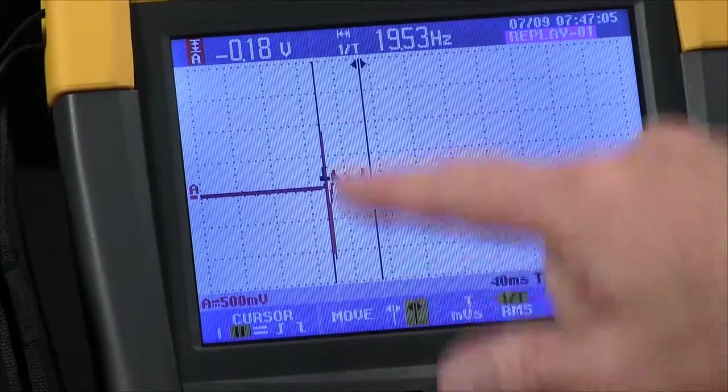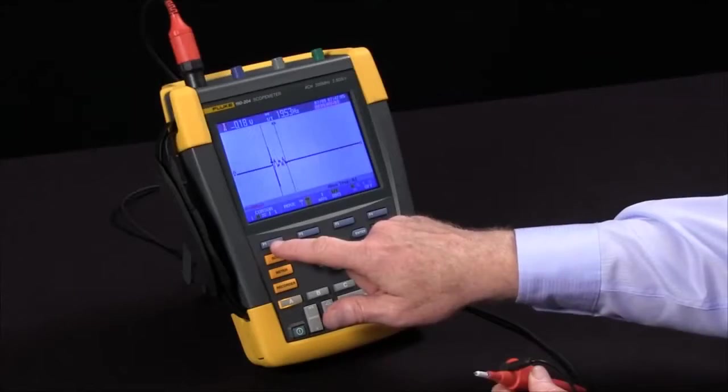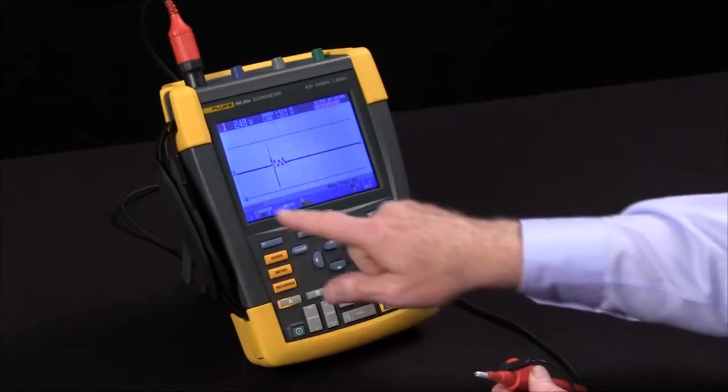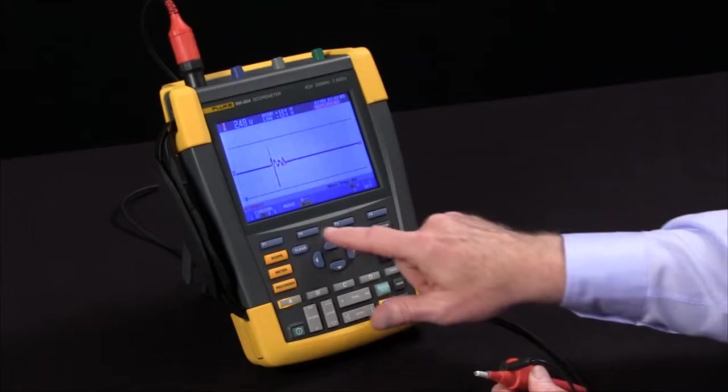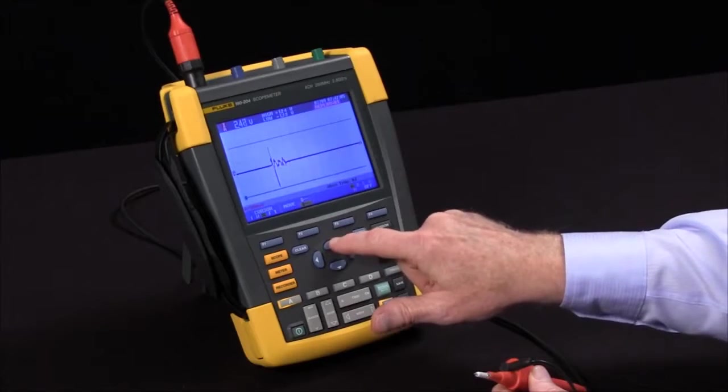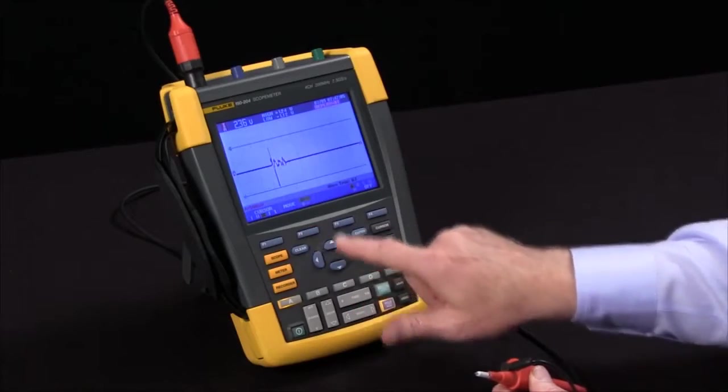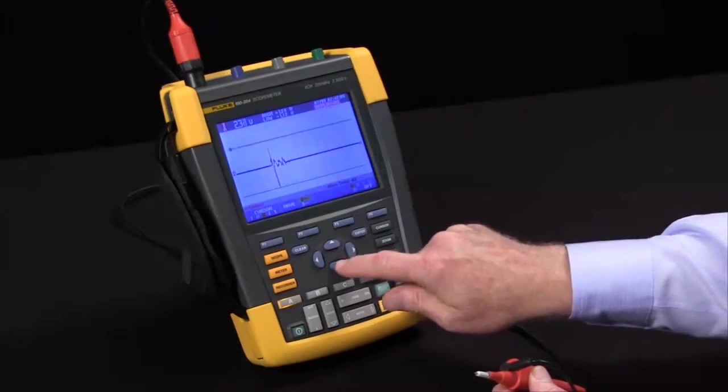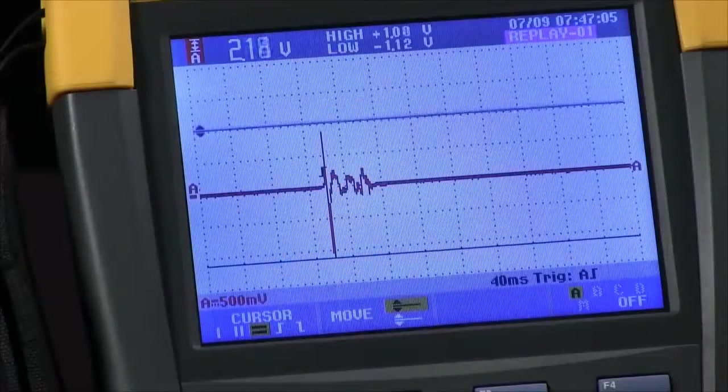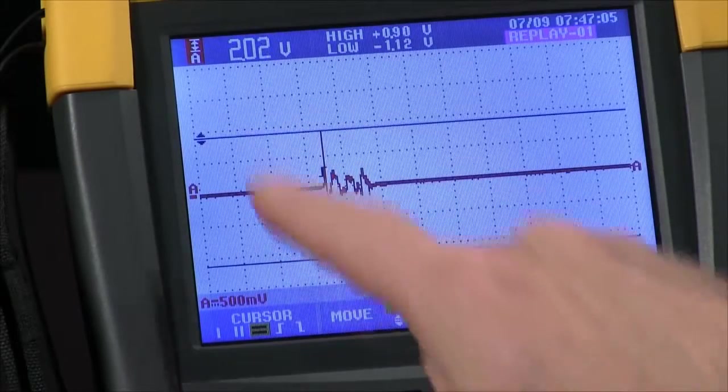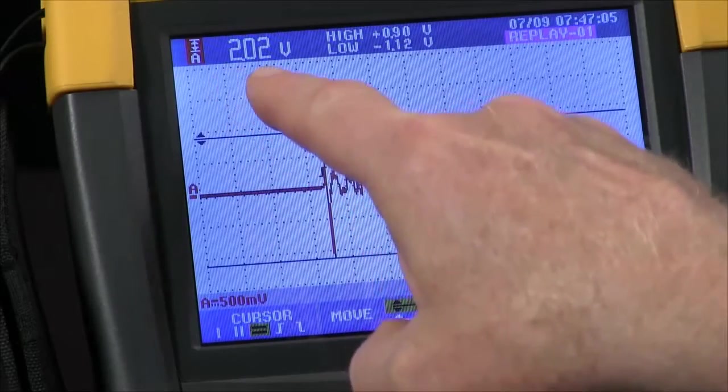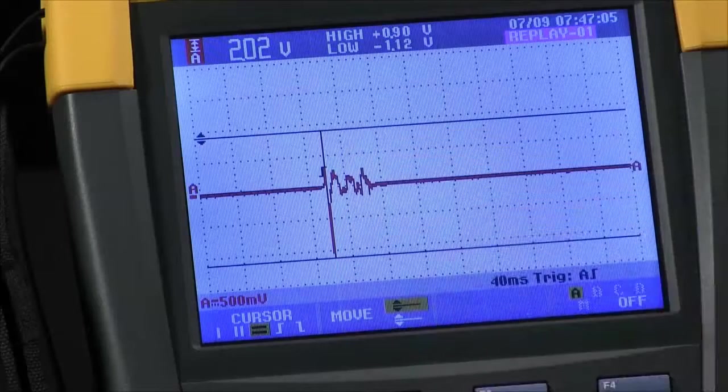To measure voltage differences I can also switch my cursors to vertical cursors. The bottom cursor is now being controlled by my arrow keys. Pull that up, switch cursors with F2, pull the top cursor down, and now I can measure the peak-to-peak voltage 2.02 volts peak-to-peak on that particular signal.